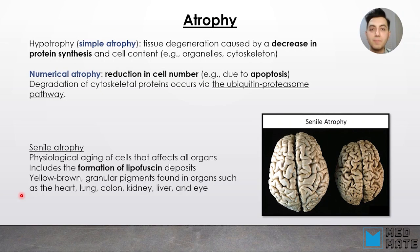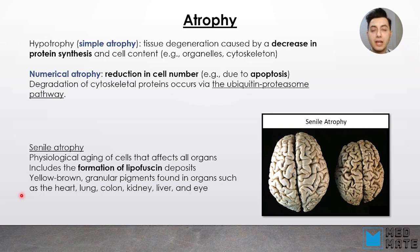Another cellular adaptation is atrophy. Atrophy is the antonym of hyperplasia and hypertrophy — it is hypotrophy. Simple atrophy is tissue degeneration caused by a decrease in cell protein production or synthesis, and also cell contents such as organelles or cytoskeletons. We have two types: numerical atrophy, which involves a reduction in cell number due to apoptosis, or degradation of cytoskeletal protein synthesis via the ubiquitin-proteasome pathway. In this pathway, ubiquitin tags different structures within cells, and then proteasomes eliminate these organelles.